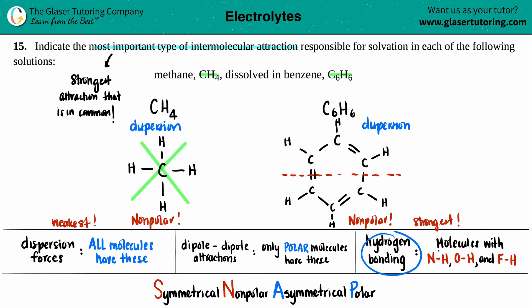For hydrogen bonding, only molecules with NH, OH, or FH have hydrogen bonding. These both have CH bonds—that's not one of the specific bonds to form hydrogen bonding. So the only intermolecular attraction CH4 has is dispersion, and the only one benzene has is dispersion. The most important type is always the strongest attraction in common, and these only have dispersion in common. So the most important one has to be dispersion.